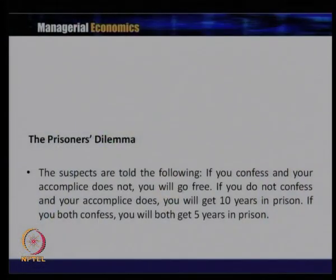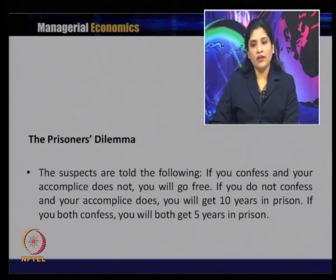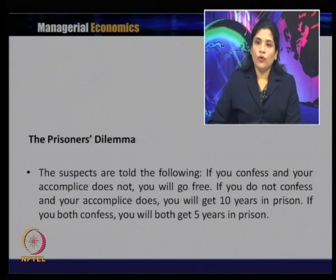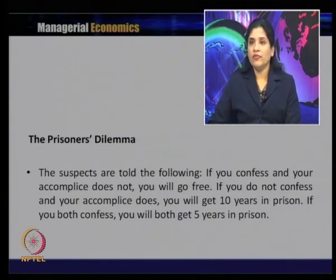The suspects are given information by the authority: If you confess and your accomplice does not, you will go free. If you do not confess but your accomplice does, you will get 10 years in prison. If you both confess, you will both get 5 years in prison. If you both do not confess, they get 1 year each. If one confesses and the other does not - the one who confessed goes free and the other gets 10 years.